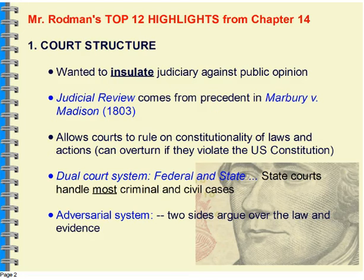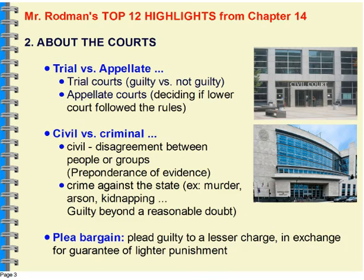We have trial courts and appellate courts. Trial courts are typically courts of original jurisdiction — they're the ones where the case originates and determines guilt or innocence. If you lose the case, you would be the one appealing. You would appeal that to an appellate court or circuit court on the federal level. If you lose there, then you can appeal it to the Supreme Court. But keep in mind that most of the cases that are appealed are not heard.